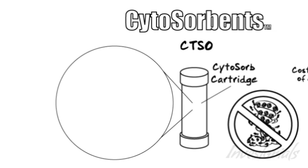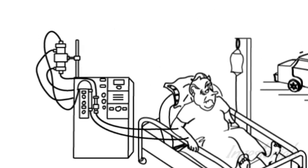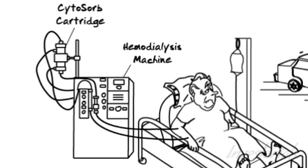The CytoSorb cartridge is filled with polymer beads that act like sponges to capture excessive cytokines. A standard hospital hemodialysis machine draws blood from the patient, pumps it through the CytoSorb cartridge, and then returns the purified blood back to the patient, thereby removing cytokines and reducing the inflammation.